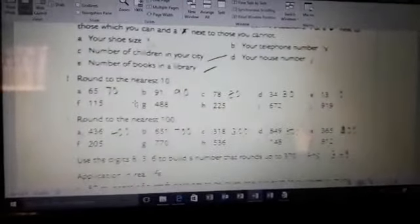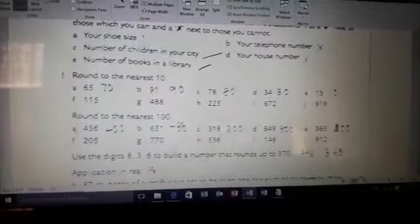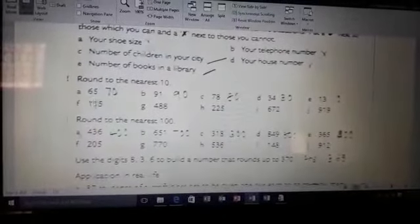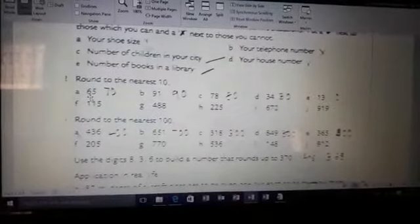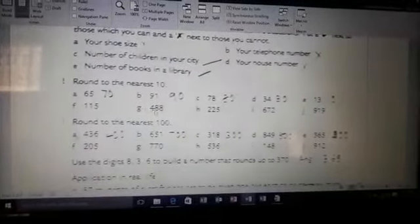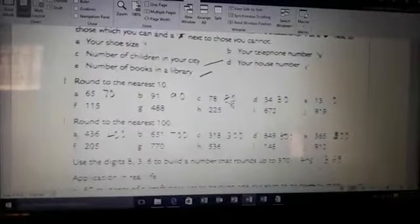Now, round to the nearest ten, round to the nearest hundred. You have to consider the tens position. Here, we have to consider the hundred position. 65, we will round it to 70. 91 to 90, 78 to 80. Like this, you have to do on your textbook.